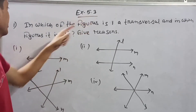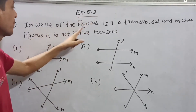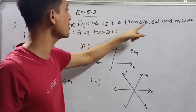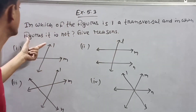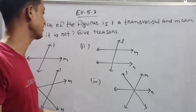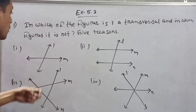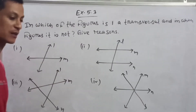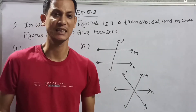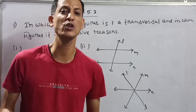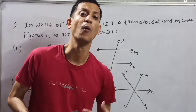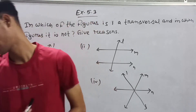Exercise 5.3: In which of the figures is L a transversal, and in which figures is it not? Give reasons. A transversal is a line that goes across two or more lines.